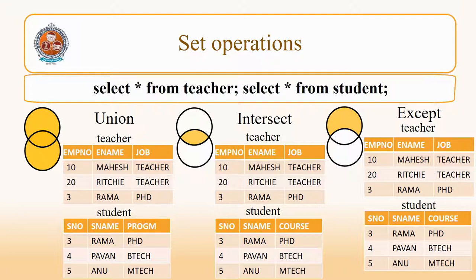For demonstrating these operations in SQL, I will use a teacher table and a student table. In the teacher table, there is EMP number, name, and job of different teachers. One is Mahesh, another teacher is Ritchie, and another teacher is Rama, who is also a student doing a PhD. In the student table, there are Pavan and Anu. Both these tables have the same number of columns, therefore we can perform these operations.